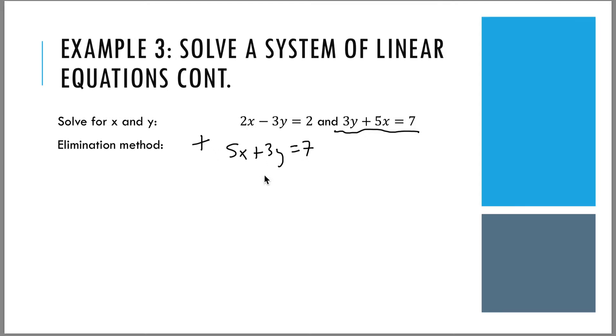If we add the two equations together, 2x + 5x is 7x, minus 3y + 3y, those will cancel out. This will equal 2 + 7, which is 9. This gives us a quick way to solve for x, which will be 9 over 7, the same answer that we found previously.